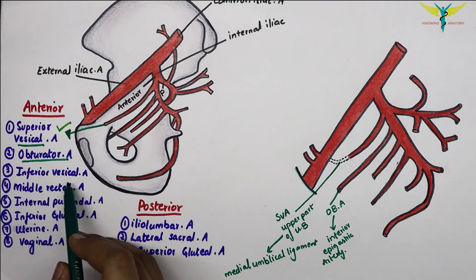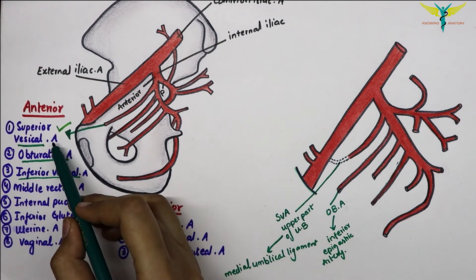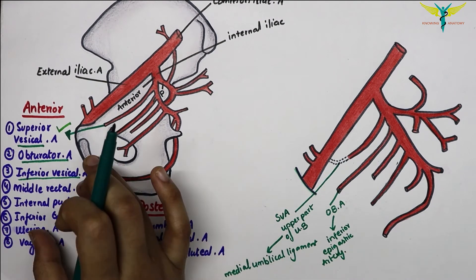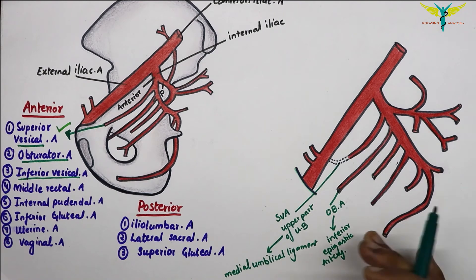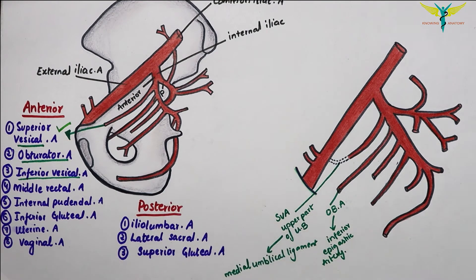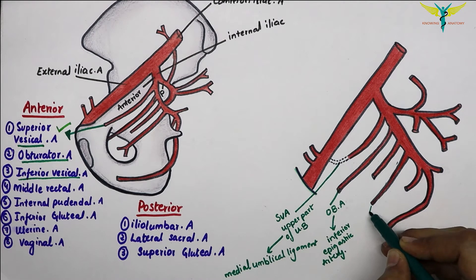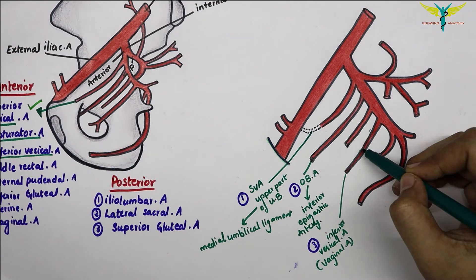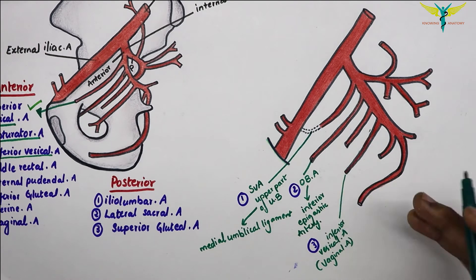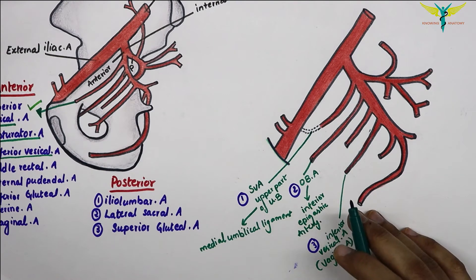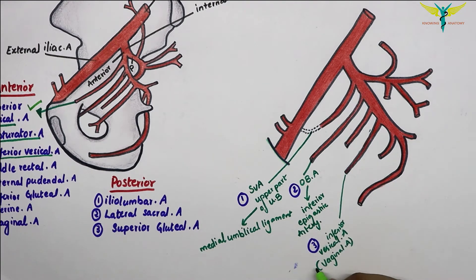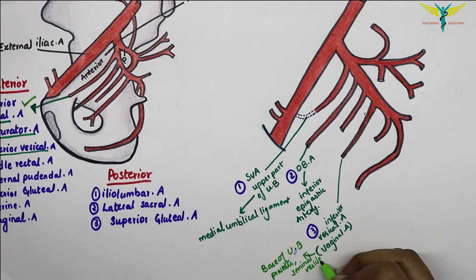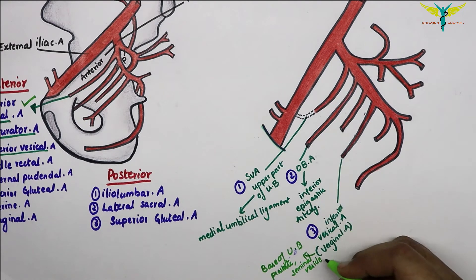The third branch is the inferior vesicle artery. It is replaced by the vaginal artery in females. It runs forward at the base of the urinary bladder and supplies the base of the bladder, prostate, and seminal vesicles in males. It also gives rise to the artery of the vas deferens.